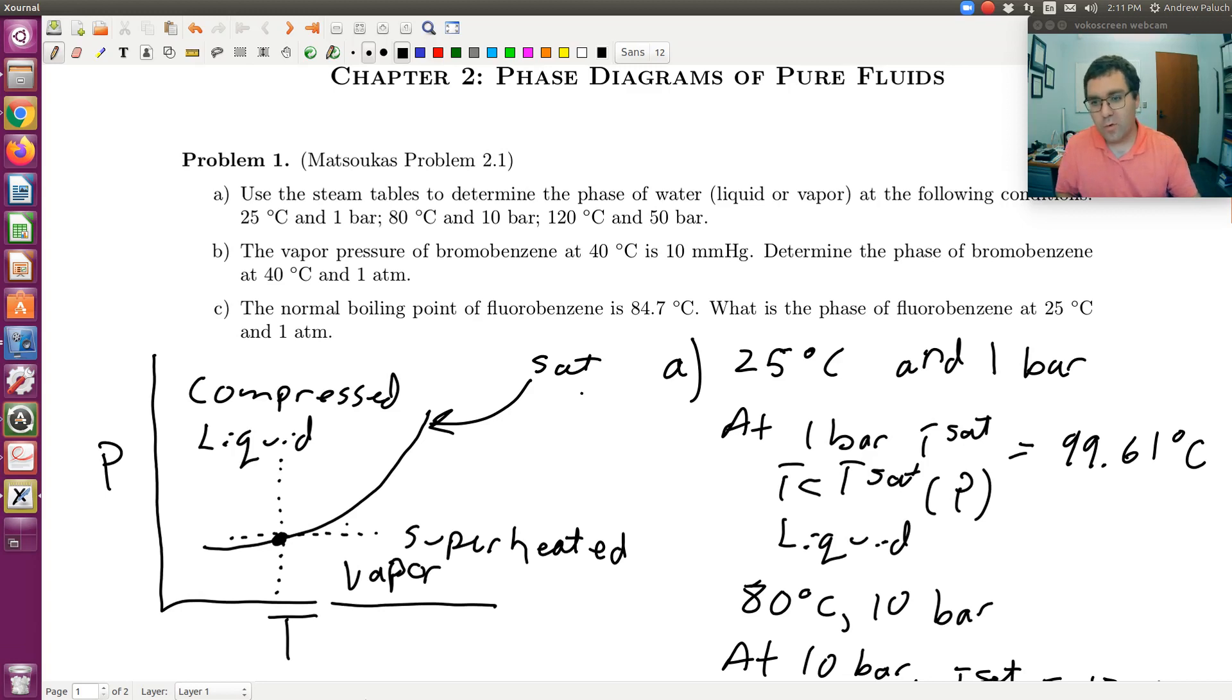So now part B. We're told the vapor pressure of bromobenzene at 40 degrees C is 10 millimeters of mercury. Determine the phase of bromobenzene at 40 degrees C and 1 atm. You shouldn't even need to write this one out. In terms of pressure conversions, there are a couple that I remember. I remember that 1 atm is 760 millimeters of mercury, which is 101.325 kilopascals, and 1.01325 bars. So if at 40 degrees C, my saturation pressure is 10 millimeters of mercury, and the pressure increases to 760 millimeters of mercury, what phase am I going to have? Well, I'm going to have a liquid, because P is greater than P_sat at T.